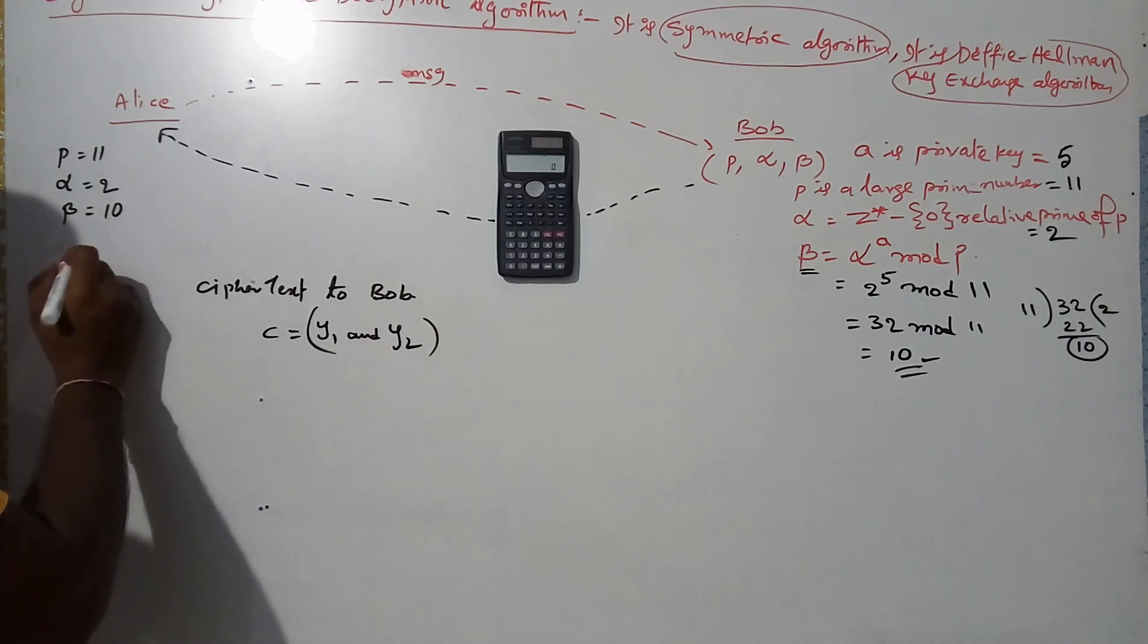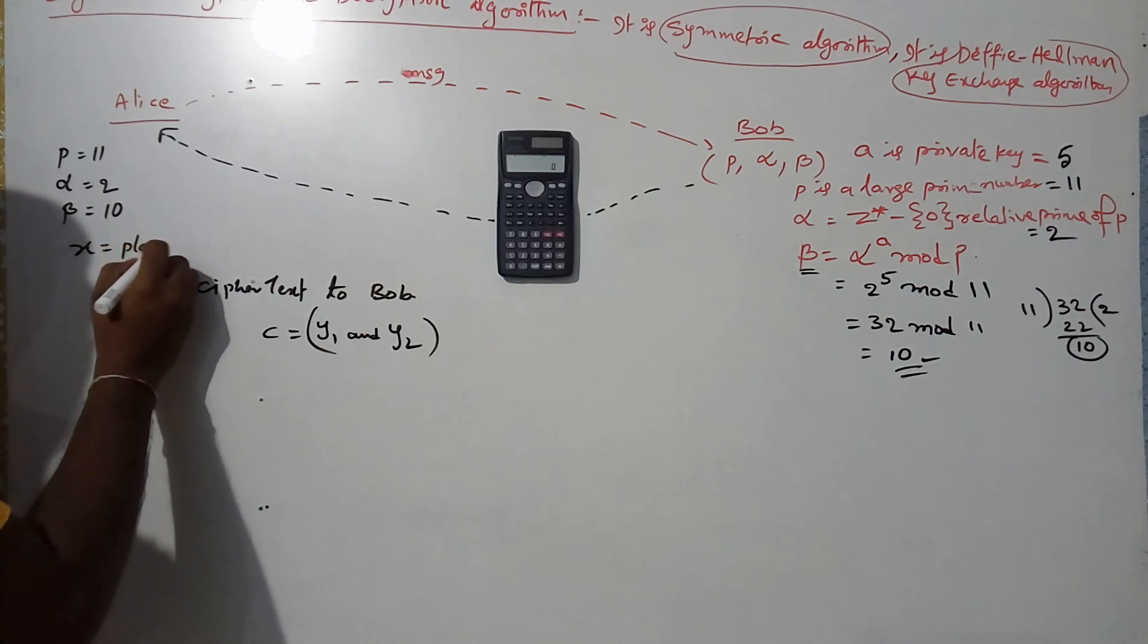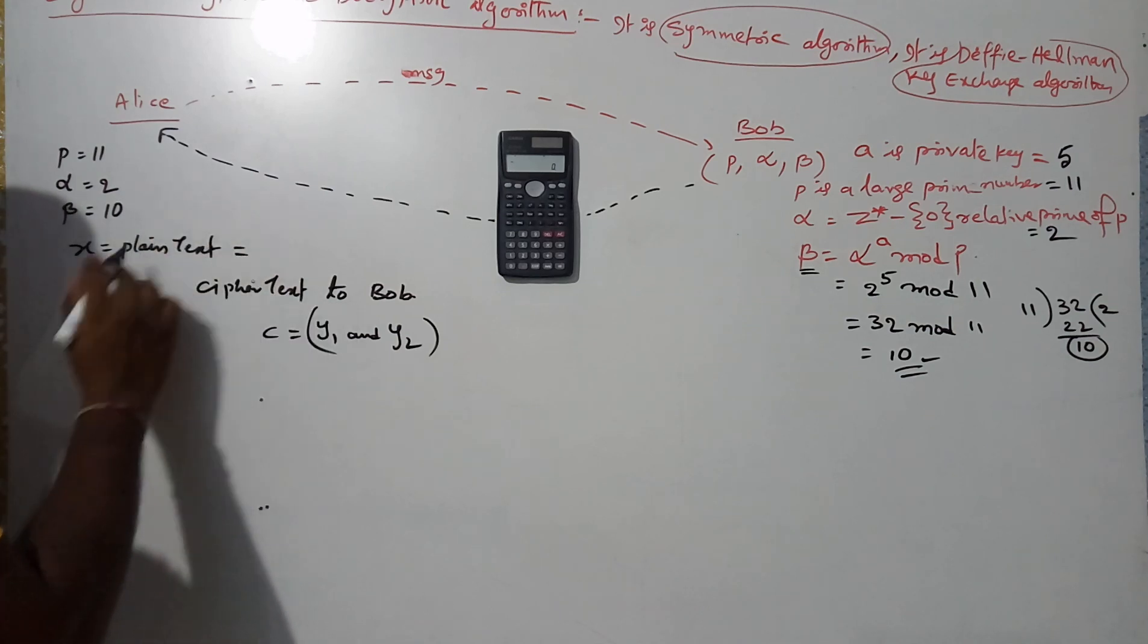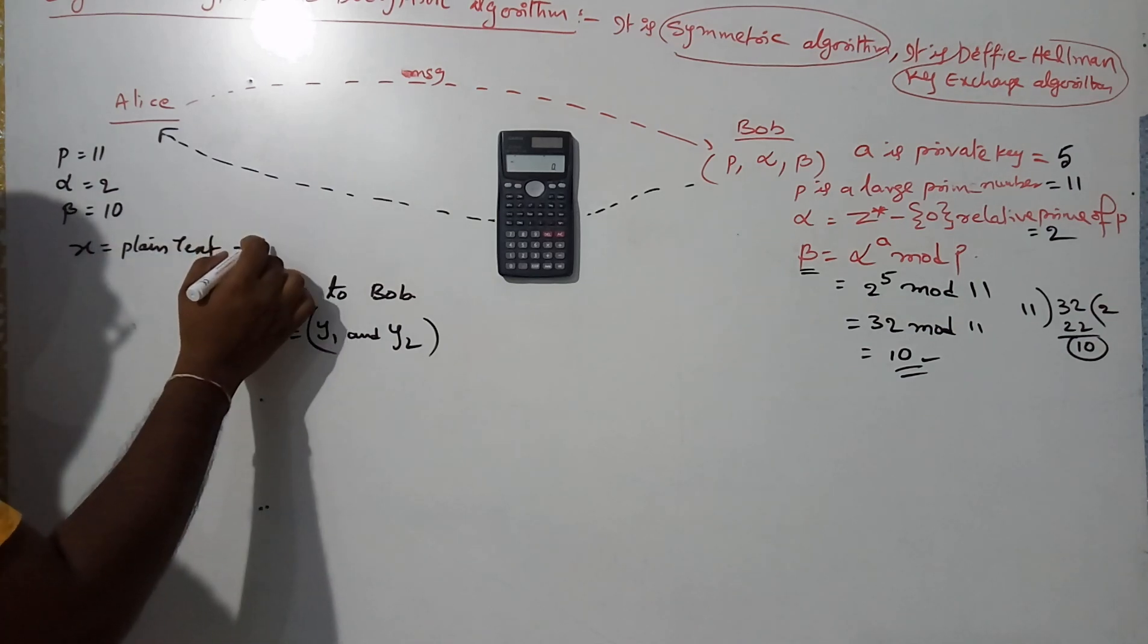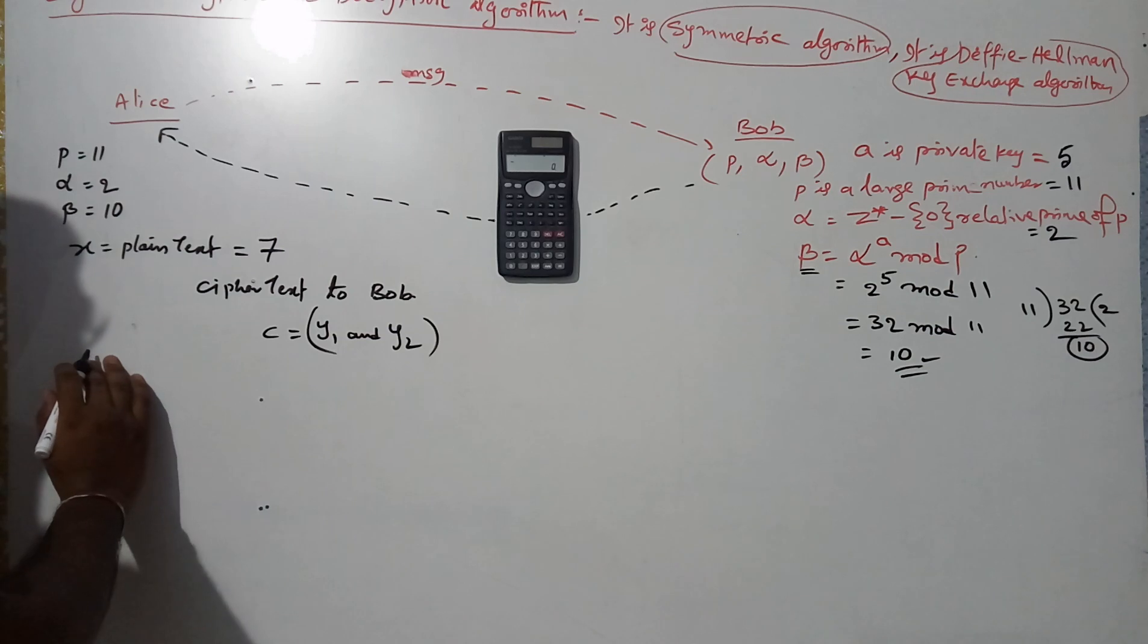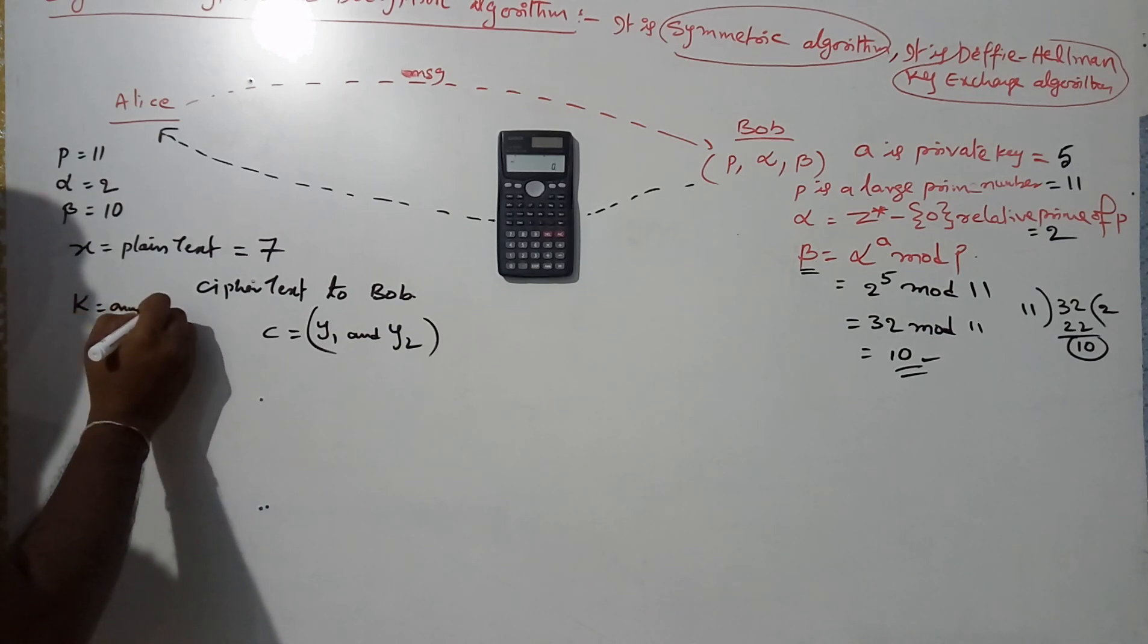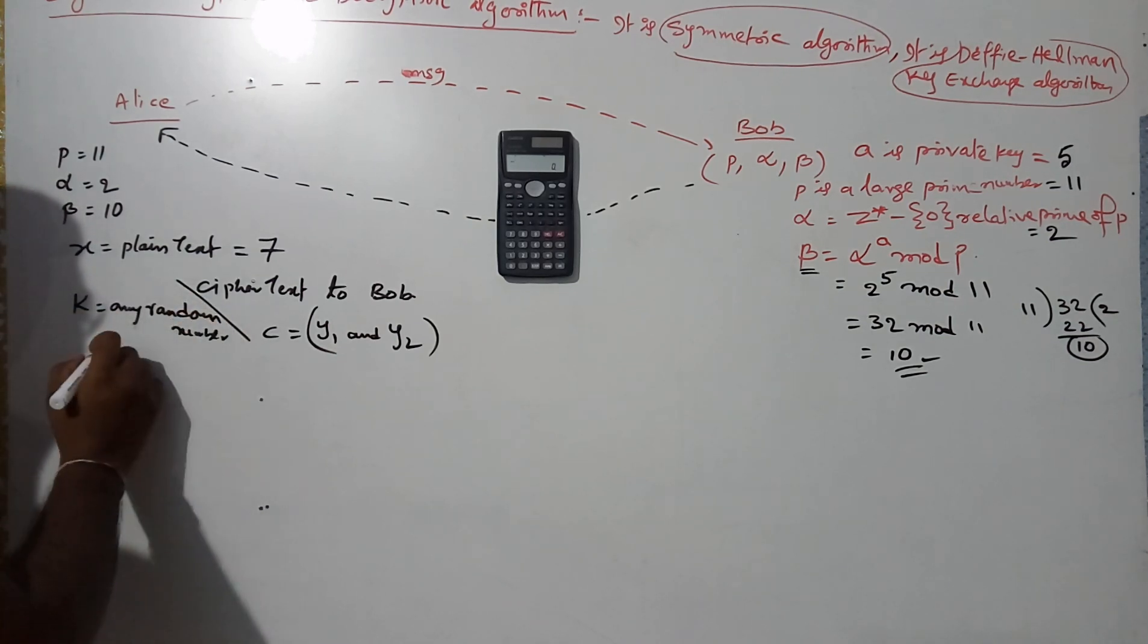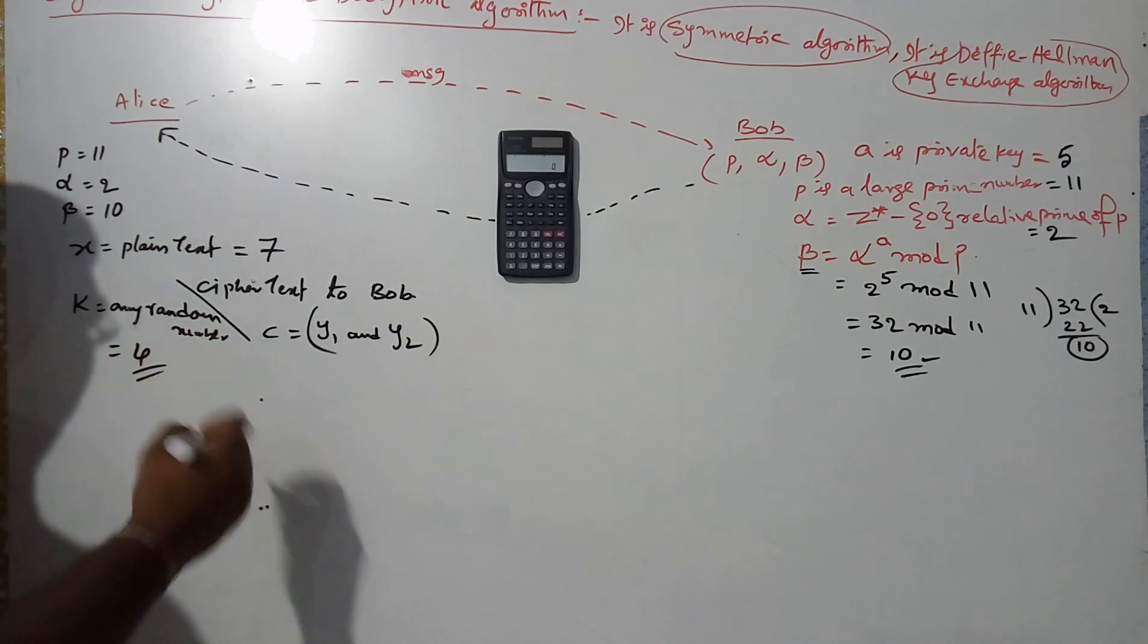x is the plaintext; I am assuming x equals 7. k is any random number. k is any random number; I am assuming k equals 4.